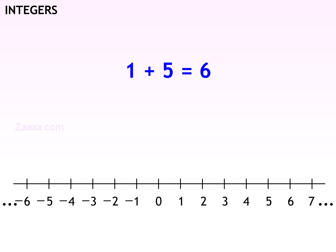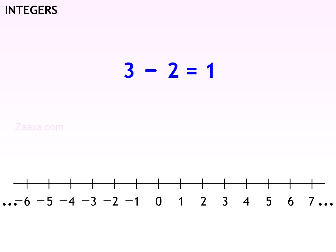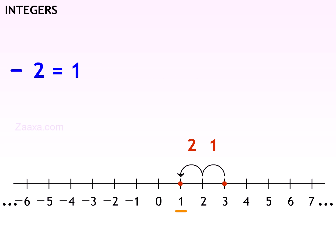To find the value of 1 plus 5 on a number line, start at 1 and go 5 steps to the right. You stop at 6 — the answer is 6. To find the value of 3 minus 2, start at 3 and go 2 steps to the left. You get the answer 1.